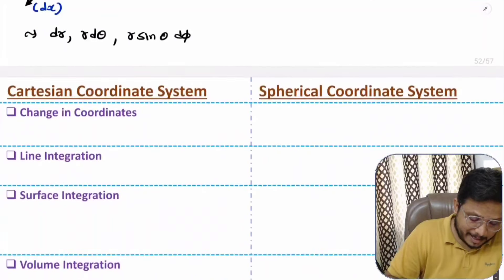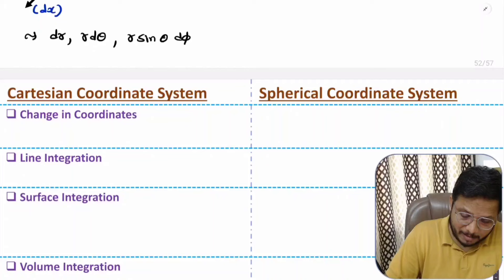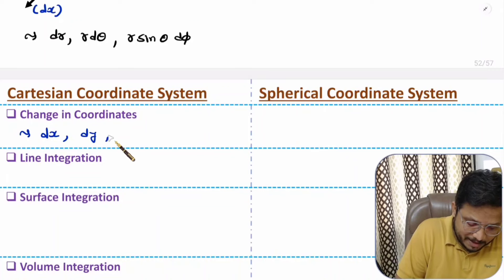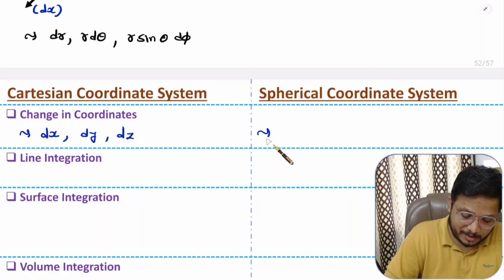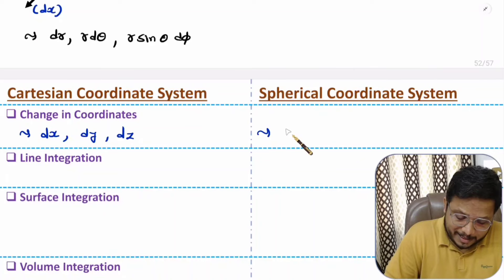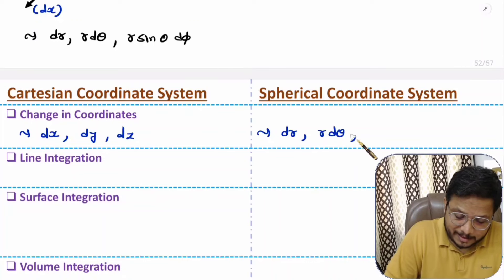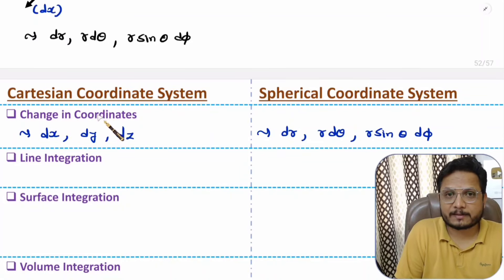So let me note down those points. In Cartesian coordinates, we change the x-axis by dx, y-axis by dy, and z-axis by dz. In spherical coordinates, the radius changes by dr, the angle theta results in a change of r d theta, and the angle phi results in a change of r sine theta d phi. That is how the change in coordinates happens.